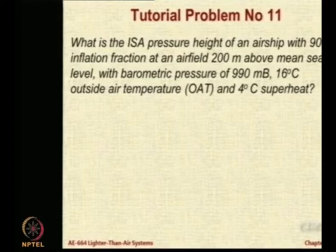The barometric pressure recorded at that place is 990 MB. So, instead of 101325, it is 990000. Temperature is 16 degrees centigrade and superheat is 4 degrees, these are the observations. So, with this you have to now tell me up to what pressure altitude can this airship be operated.